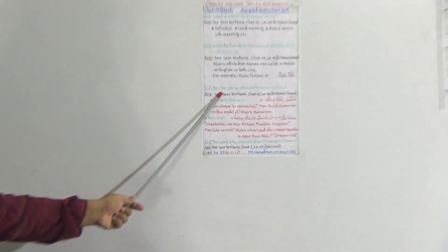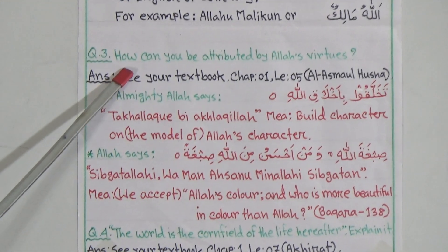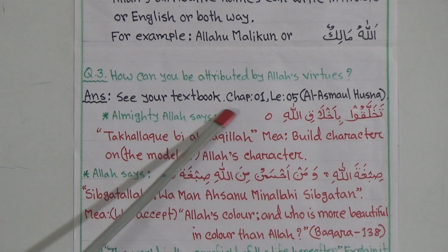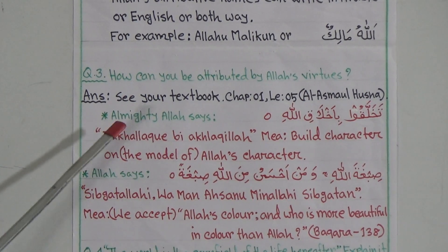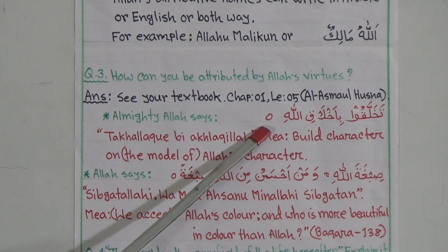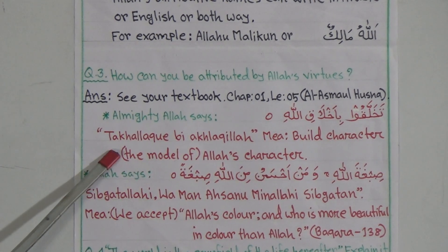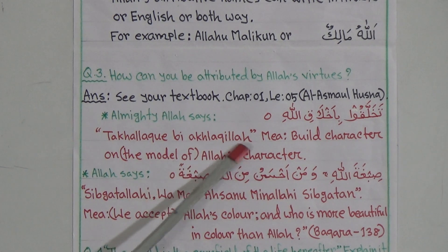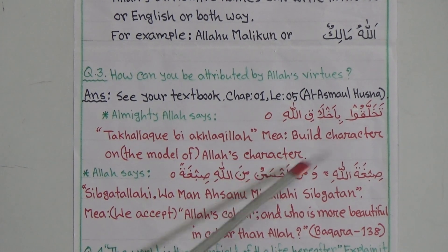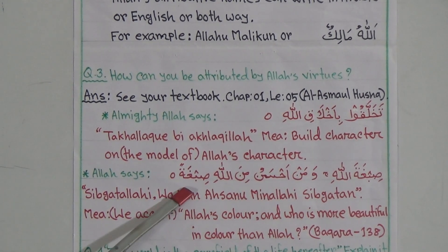Now, question number 3: how can you be attributed by Allah's virtues? Students, pay attention here. The answer is in your textbook, Chapter 1, Lesson 5, Al-Asma-ul-Husna. You can add Allah's speech there. I have written here in Arabic, in the pronunciation, and the meaning also: 'Build character on the model of Allah's character.' This is Allah's speech. And another one — this is not in your previous or present book, I collected this Arabic: 'We accept Allah's colour and who is more beautiful in colour than Allah.' If you write this one, that will be better.